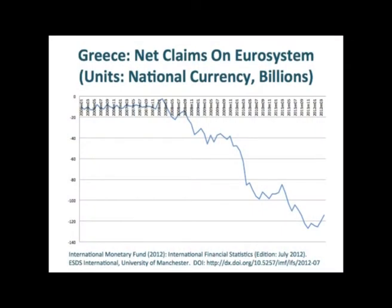Data in the country tables is fairly raw and unprocessed — for example it might be in local currencies. It's not designed to make cross-national comparisons; it's designed for countries to measure their own progress against time. For example, here you can see the amount of net claims on the Euro system for Greece, which shows the falling confidence in the Greek banking system as the central banks have to step in to back Greek loans.